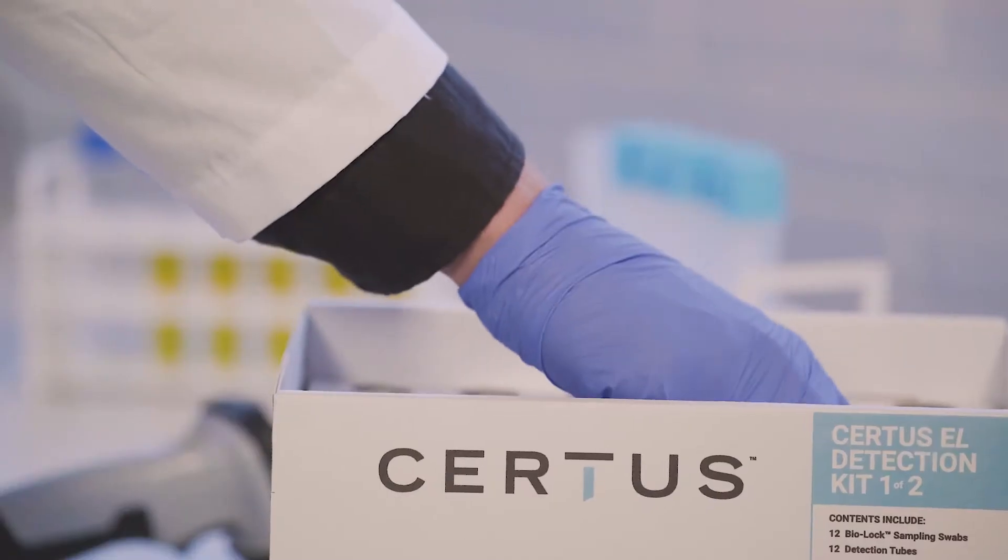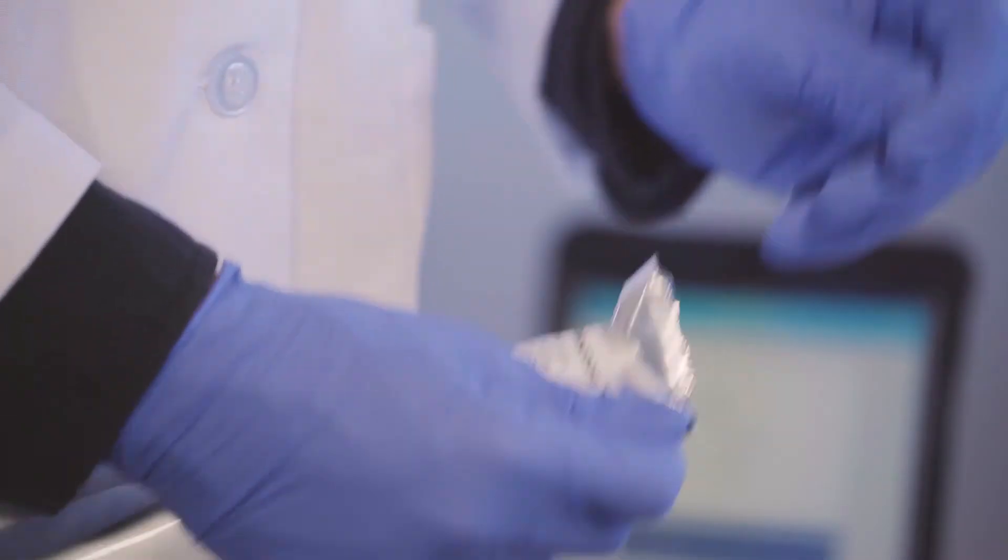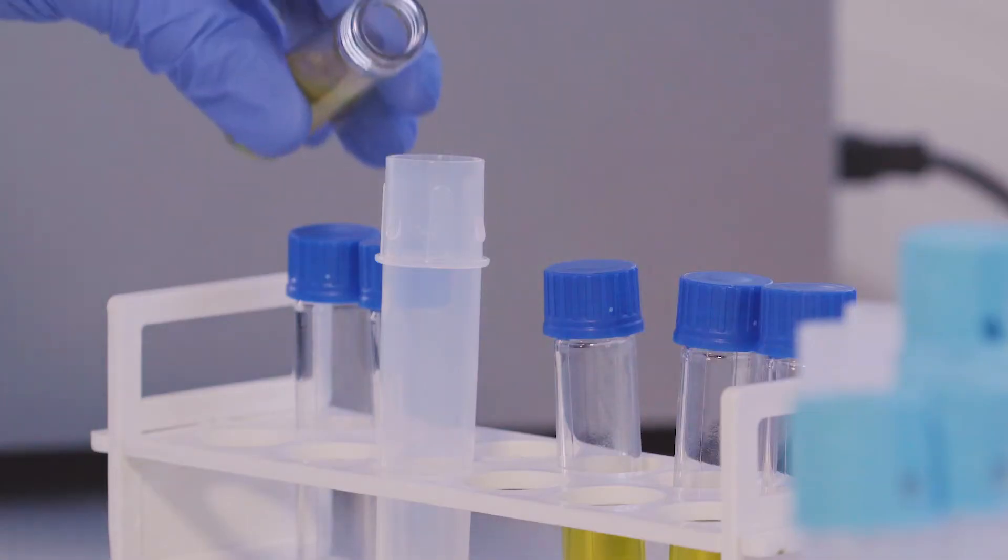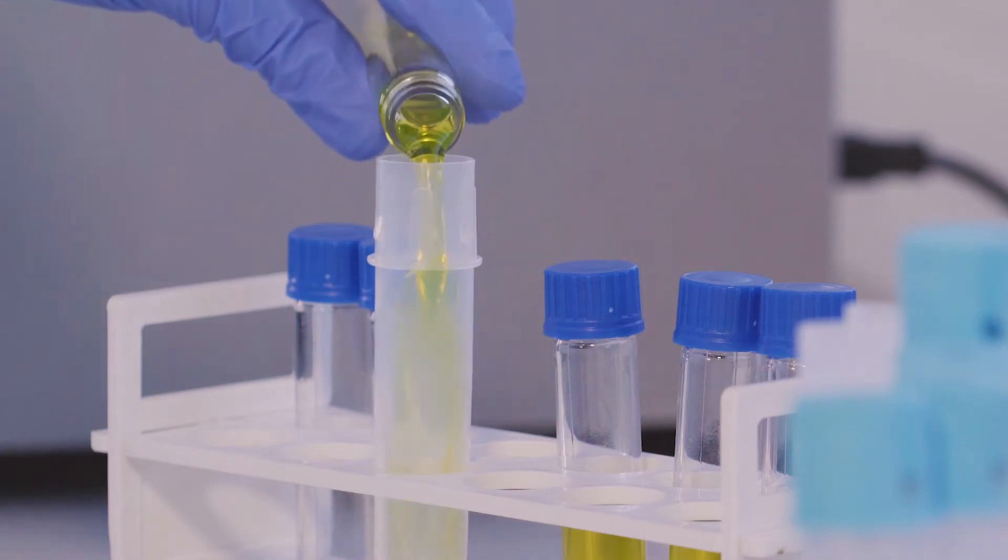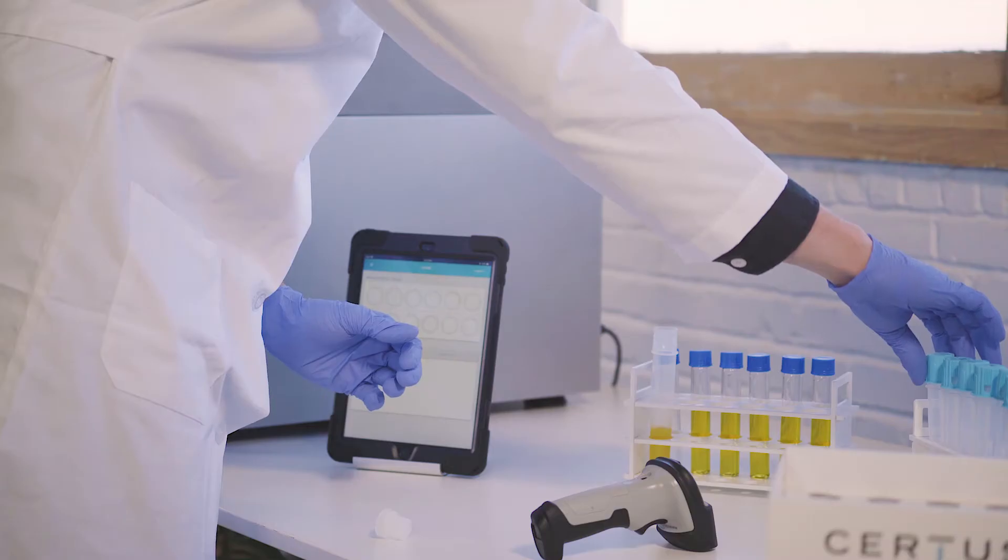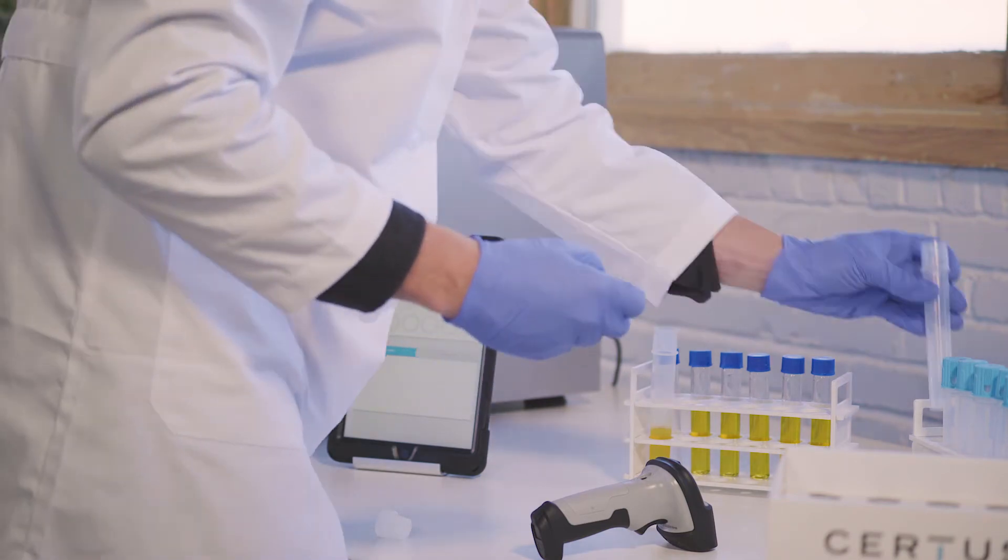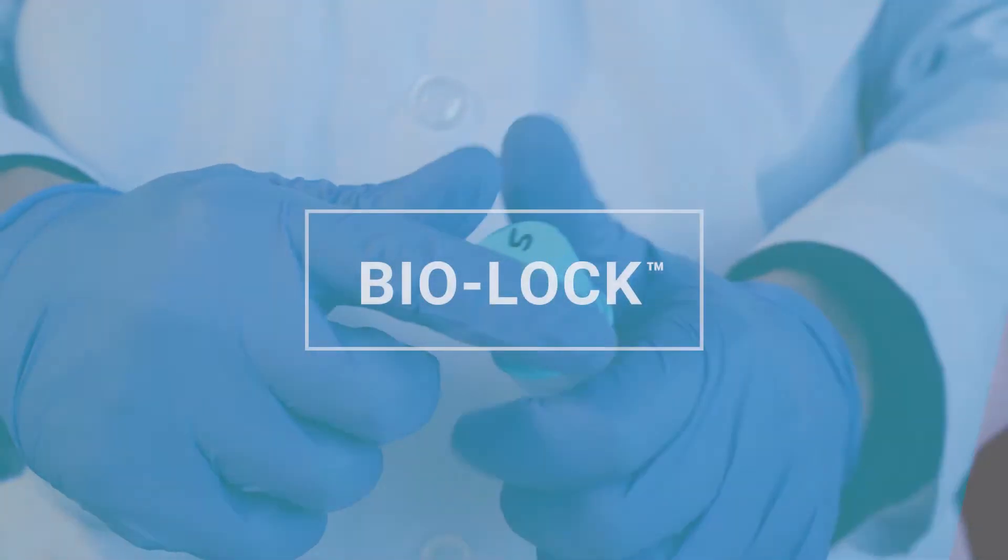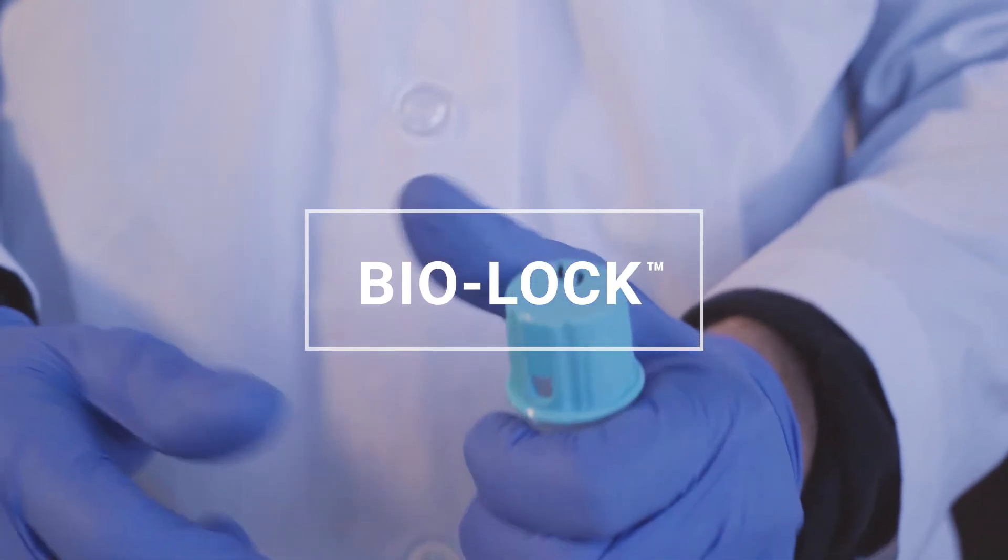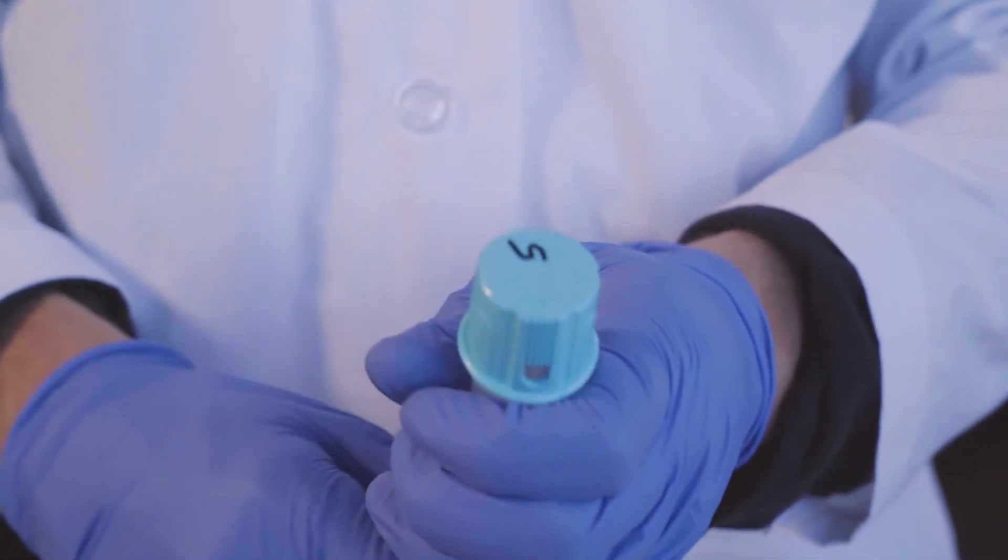After sampling, go to the detection unit, open the protective foil pouch detection tube, and simply add the pre-measured selective growth media. Remove the sampling swab from the transport tube and place it into the detection tube with the media. Firmly press down the BioLock cap till you hear a click. The tube is now permanently sealed, leak-proof, and safe.